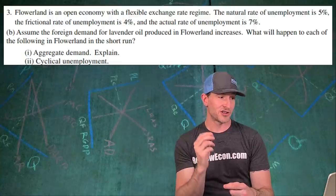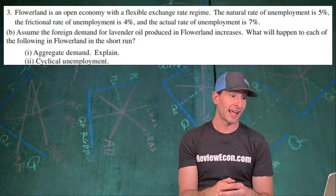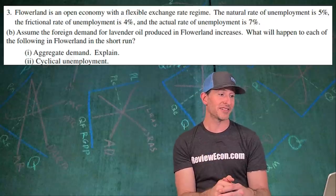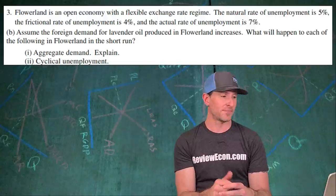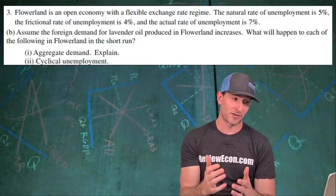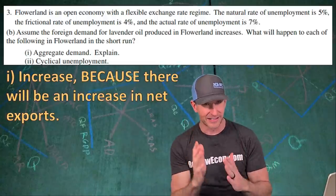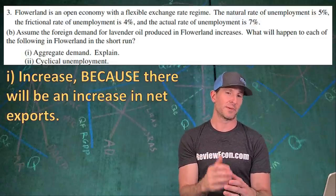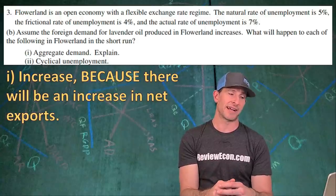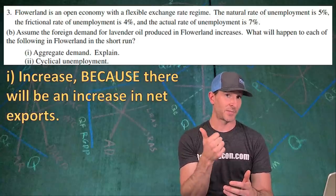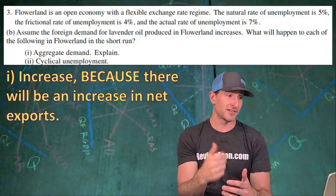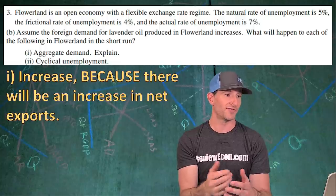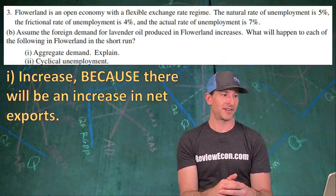For part B, we assume that foreign demand for lavender oil produced in Flowerland increases. What will happen to aggregate demand in the short run? Aggregate demand will increase, because there's an increase in net exports — our aggregate demand shifter, which includes exports minus imports. Since there's an increase in foreign demand, there will be an increase in exports of lavender oil, so aggregate demand increases. As for cyclical unemployment, the rightward shift of aggregate demand will increase real output in the ASAD model, correlating to lower unemployment — a decrease in cyclical unemployment.